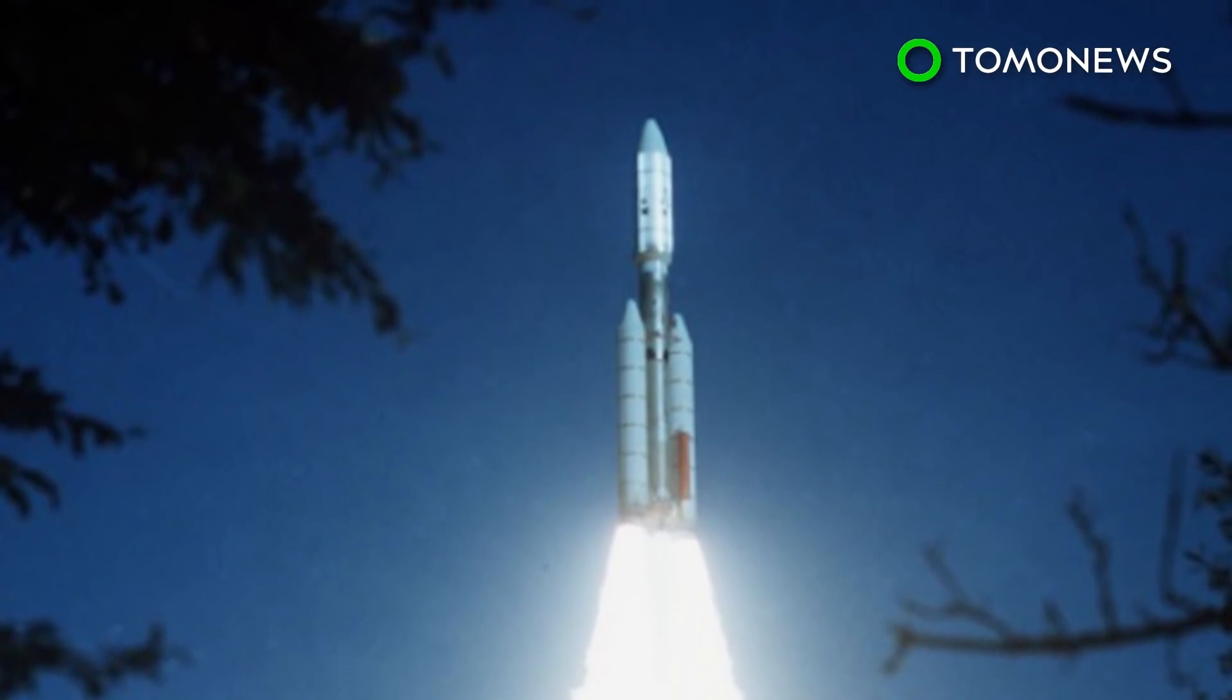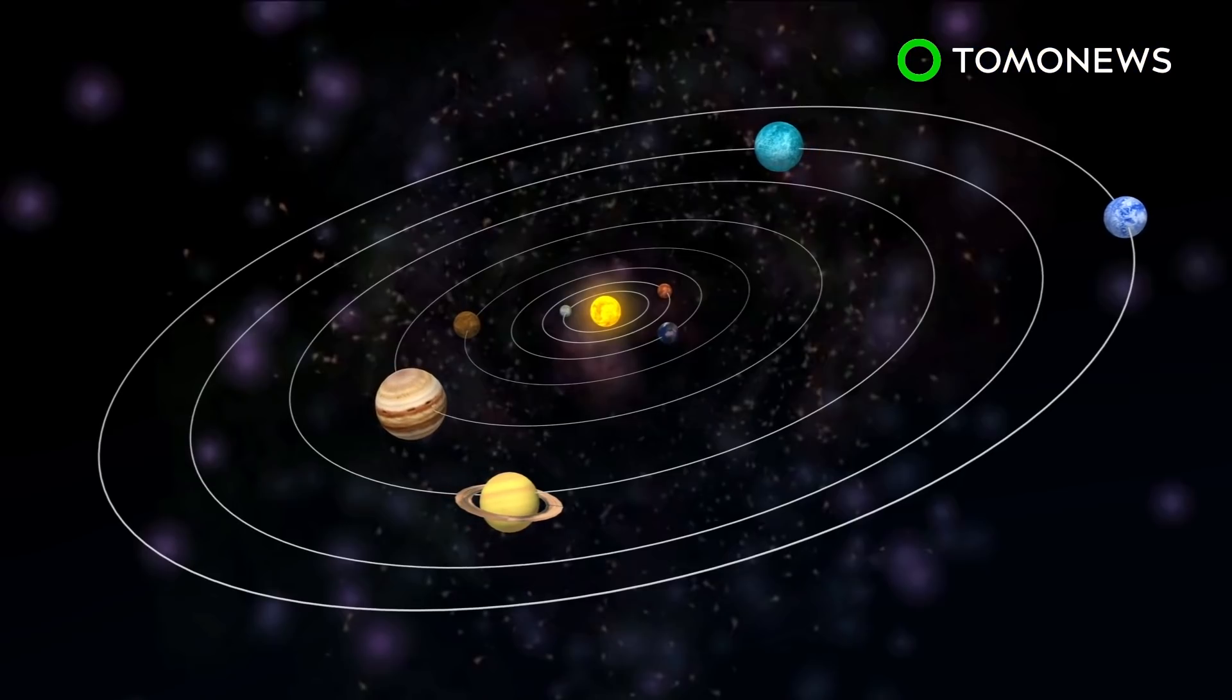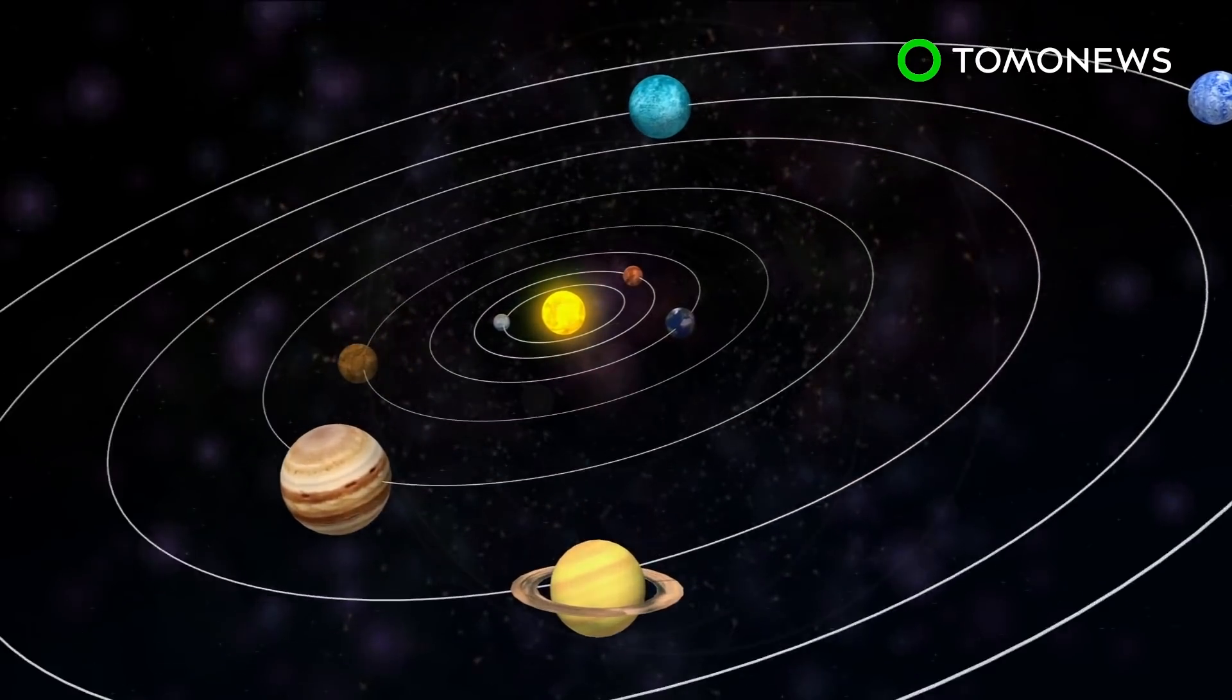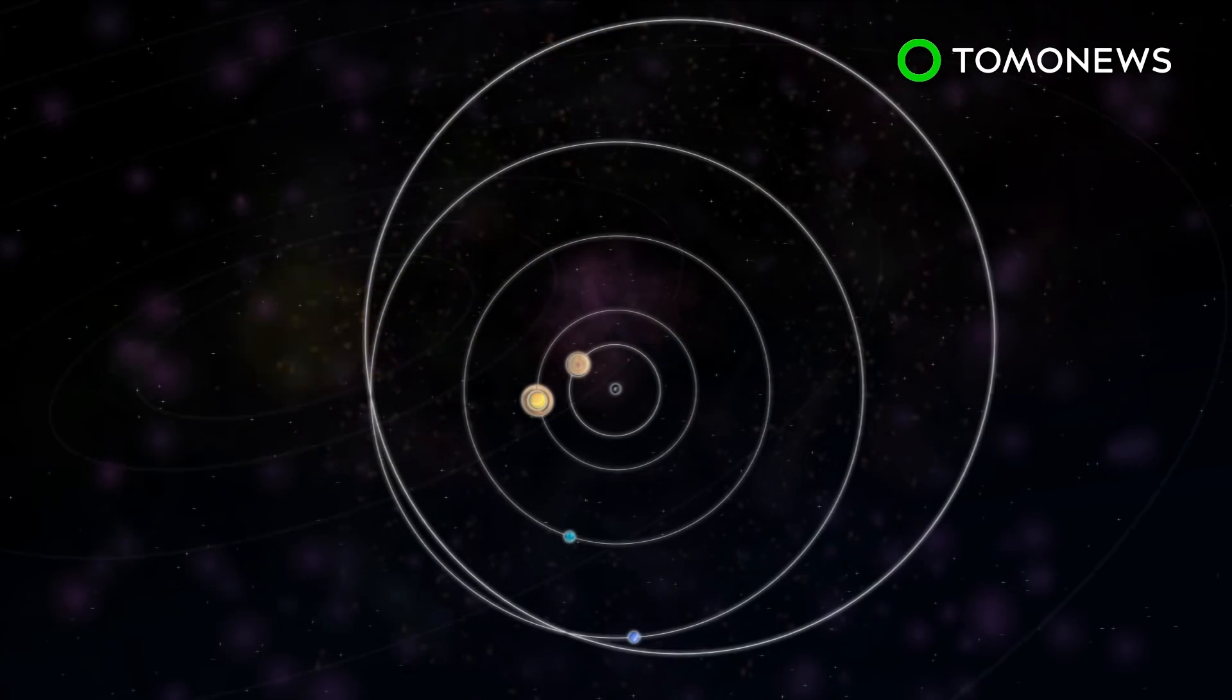The Voyager 1 and Voyager 2 spacecraft were launched in 1977 to take advantage of an alignment of Jupiter, Saturn, Uranus, and Neptune that made it possible to use gravitational assists to explore the planets in a much shorter time. This alignment appears once every 175 years.